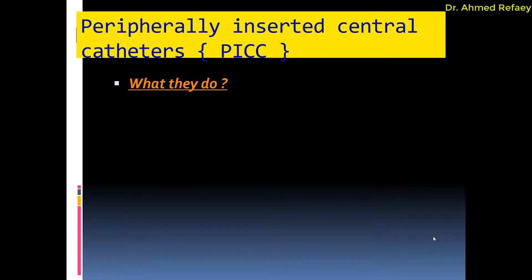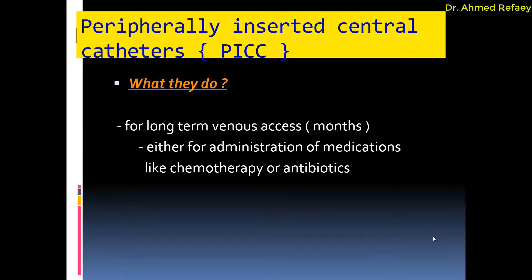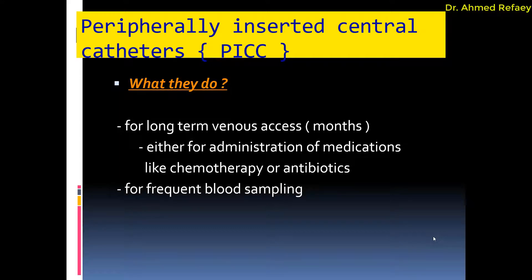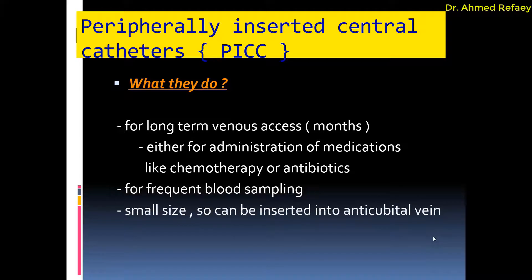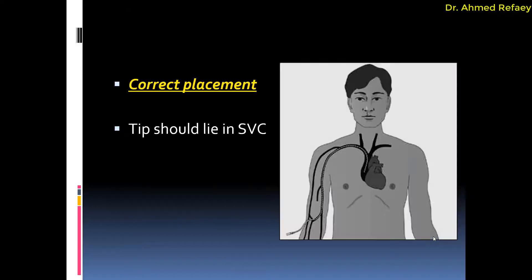Coming to the second catheter type: peripherally inserted central catheters or PICC. They are used for long-term venous access for months, either for administration of medications like chemotherapy or antibiotics, or for frequent blood sampling. Because of their small size, they can be inserted into the antecubital vein. Correct placement goes from the antecubital vein to the axillary vein, subclavian vein, and superior vena cava.